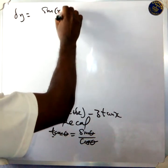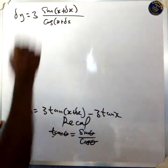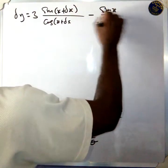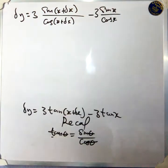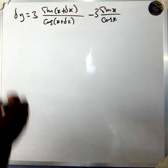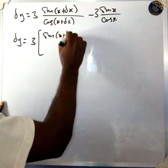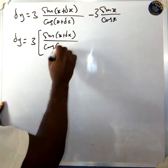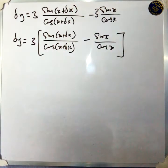So you have sine(x plus delta x) over cos(x plus delta x), outside the bracket minus sine x over cos x. That is what it will be. So this delta x is also here. You can see that delta x is common, so you can factorize it — bringing delta x outside. So you have delta y equal delta x into sine(x plus delta x) over cos(x plus delta x) minus sine x over cos x.